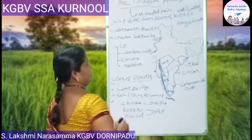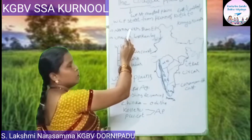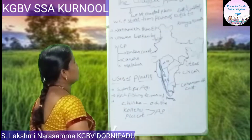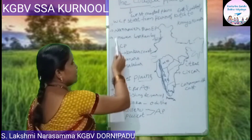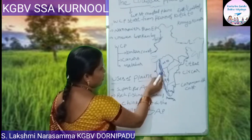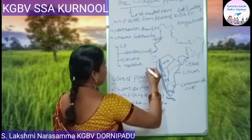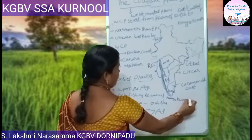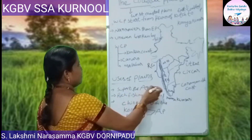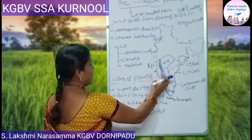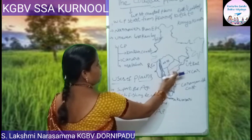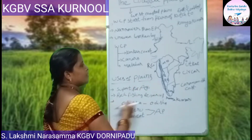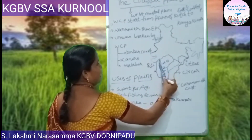Now let us see the coastal plains. These coastal plains are divided into two types: West Coastal plains and East Coastal plains. The West Coastal plains stretch from Rann of Kutch to Kanyakumari. These Western Coastal plains are narrower compared to the Eastern Coastal plains, and they are uneven and broken by the Western Ghats.